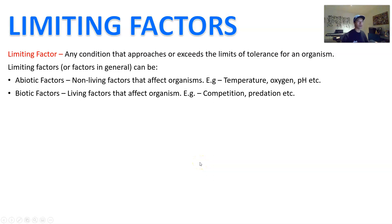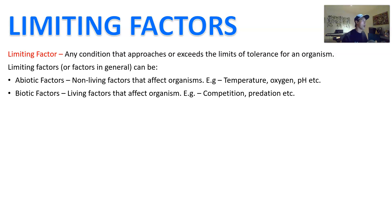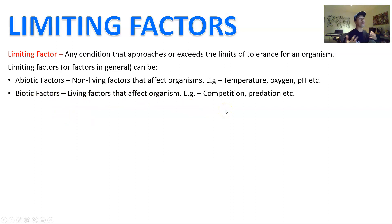When you have something that is going to approach or limit the tolerance of an organism, we call it a limiting factor. Limiting factors can be both abiotic or biotic. An abiotic example would be something like temperature — if the temperature is too hot in a particular environment, then the temperature is a limiting factor for that population. Biotic factors like competition or predation can also be limiting factors because they're going to limit the survival or tolerance of the organism in that location.